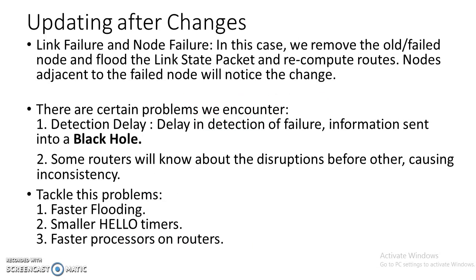Updating after changes — Link Failure and Node Failure: we remove the old or failed node, flood the link state packet, and recompute routes. Nodes adjacent to the failed node will notice the change. There are certain problems we encounter. First, Detection Delay: delay in detection of failure means information is sent into a black hole, and some routers will know about the disruption before others due to inconsistency. We tackle these problems by faster flooding, smaller hello timers, and faster processors on routers.